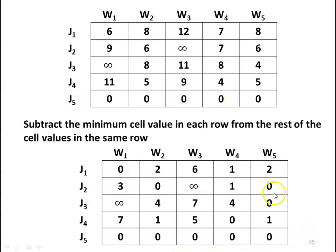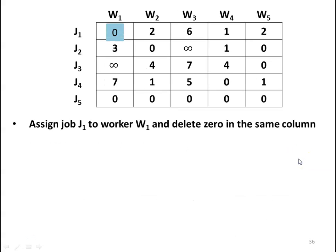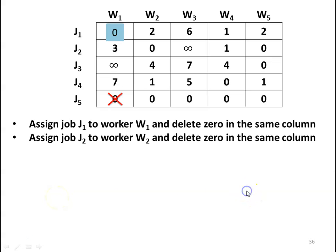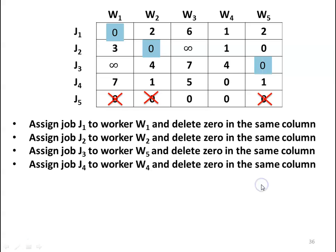Checking: row J1 has 1 zero, row J2 has 2 zeros, row J3 has 1 zero, row J4 has 1 zero, row J5 has zeros. All columns have at least 1 zero. Now make the assignment. Assign job J1 to worker W1 and delete zeros in the same column. Assign job J2 to worker W2. Assign job J3 to worker W5. Assign job J4 to worker W4 and delete the zero in the same column.